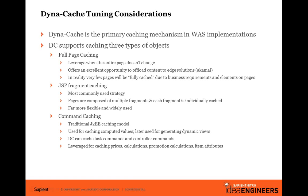Dynacache resides in the JVM. It has disk offload capabilities, but it is designed to fit in your heap. So if your heap is 1.5 GB, you need to keep around 300 to 400 MB for Dynacache. It has disk offload capabilities and also eviction techniques. If you cache a particular page or fragment and it is not used, it uses the least recently used (LRU) algorithm to kick out those entries.